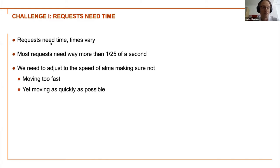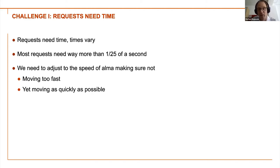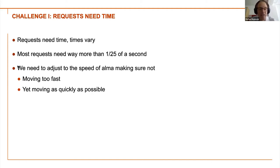Challenge number one: requests need time. A request needs time and times vary — there's a system on the other end of the cloud we cannot really look deeply into. Requesting might be quick one time and slow another, but we need to cope. Most requests need way more than 1/25th of a second — that's 40 milliseconds. So we could not just do a simple loop; we need to adjust the speed, making sure not to move too fast while still moving as quickly as possible.